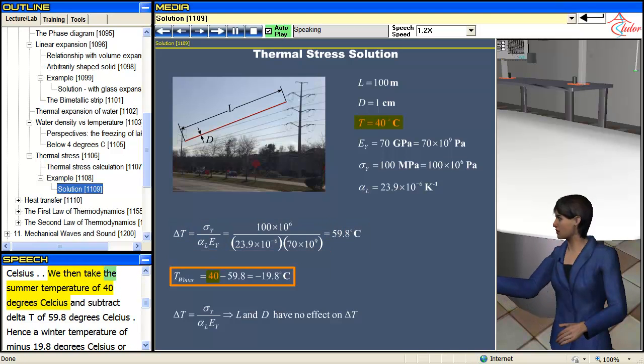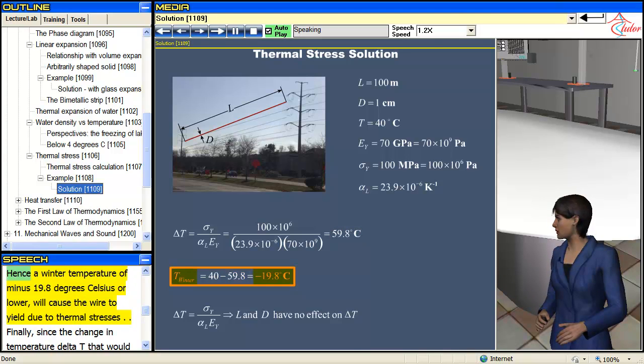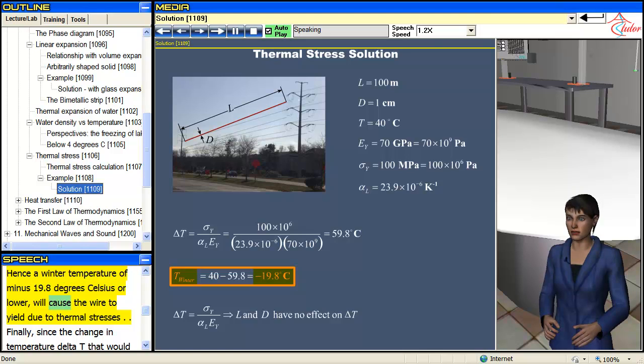We then take the summer temperature of 40 degrees Celsius and subtract ΔT of 59.8 degrees Celsius. Hence a winter temperature of minus 19.8 degrees Celsius or lower will cause the wire to yield due to thermal stresses.